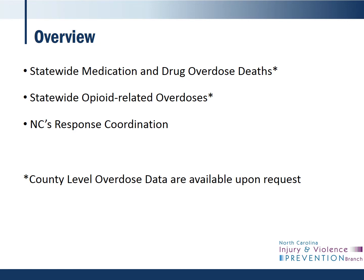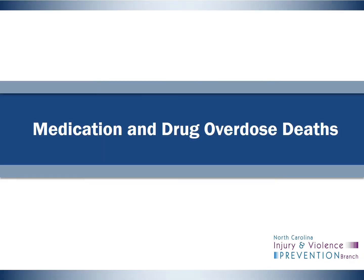This core set of slides provides an overview of statewide medication and drug overdose deaths, opioid-related overdoses, and some information on our state's response coordination. We do post multiple county-level data tables on our Injury and Violence Prevention Branch Poisoning Data website, and can provide a county-level slide set upon request. This presentation is not intended to cover all data related to the overdose epidemic, but rather to give an overview of some of the key trends. To start, we'll discuss medication and drug overdose deaths across the state of North Carolina. Medication and drug overdose deaths consist of a broad category of drugs, including prescription, controlled, over-the-counter, and illicit substances.